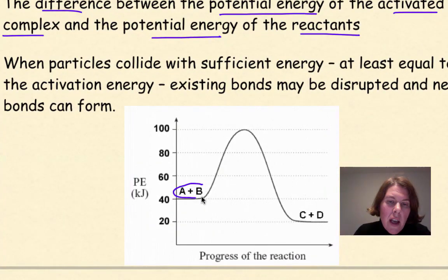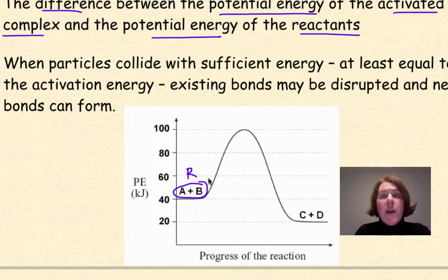Here are my reactants, A plus B. And I'm going to call that R for reactants. And here are my products, C plus D. So let's put a P right here.